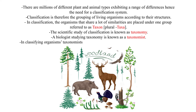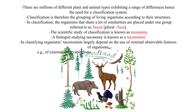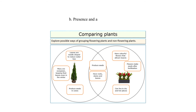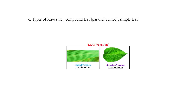In classifying organisms, taxonomists largely depend on the use of external observable features. Examples of external observable features in plants used in classification include: A) the type of root — i.e., tap root, fibrous roots, adventitious roots, etc.; B) presence or absence of flowers; and C) types of leaves — i.e., compound leaf with parallel veins, or simple leaf with network veins.